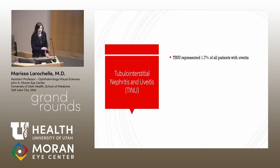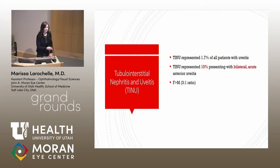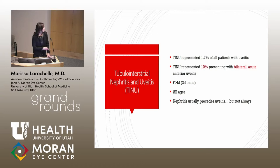TINU is rare — it comprises less than 2% of all uveitis cases. However, looking specifically at acute anterior uveitis that is bilateral, simultaneous in onset, it accounts for 10% of patients, and greater than 30% of these are in patients under 20 years old. There is an increased female-to-male ratio, though this is changing in the literature with more males being reported recently. It can occur at all ages; the median age of onset is 15 years old. Typically, kidney involvement happens before the uveitis, but in 20% of cases the uveitis can happen first.